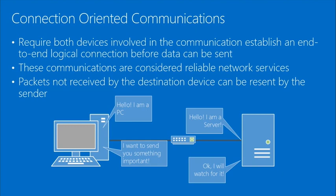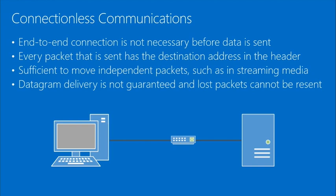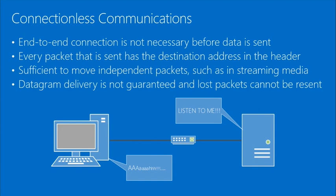Connectionless communication doesn't require an end-to-end connection before data is sent. Connection-oriented might be a file transfer or web page. Connectionless would be streaming a video — you don't necessarily need every frame. Like a radio broadcast, the sender doesn't know if the message is getting received. Every packet still has a destination in the header, but delivery isn't guaranteed. In the animation, the server sends and the client is just listening.